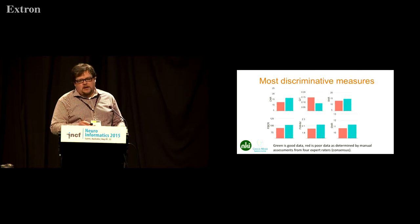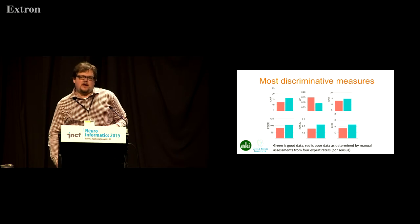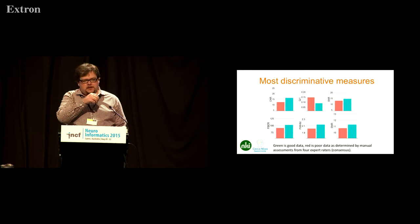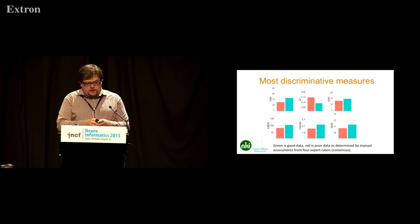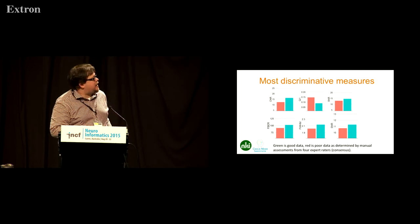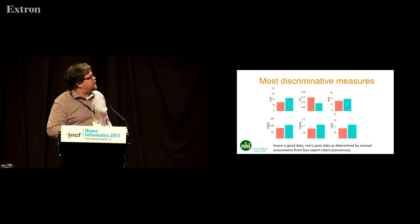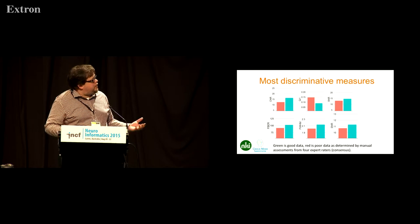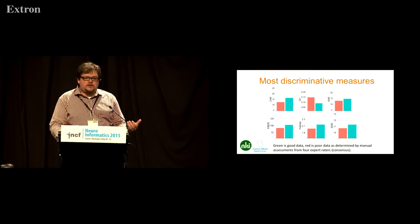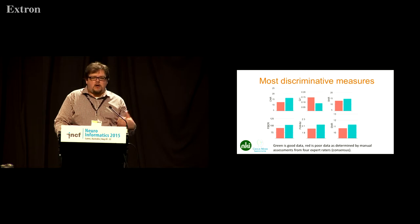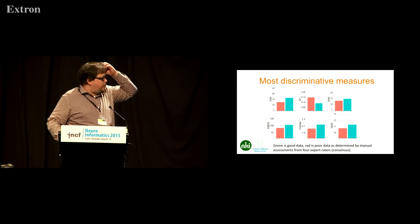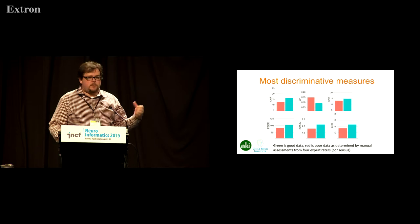With the ABIDE dataset, four manual raters have gone through various publications and provided subject lists. We can run discrimination analysis to see which measures are the most sensitive. For example, QI1 — the percent of artifact voxels — may be a better one to examine. Our hope is that now these resources are available, we can learn automated methods and machine learning techniques to identify the most sensitive measures and build automatic classifiers for data quality issues.